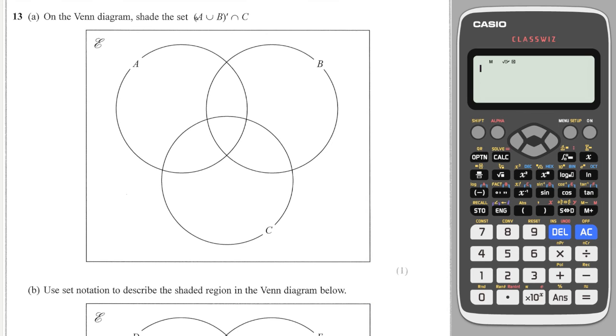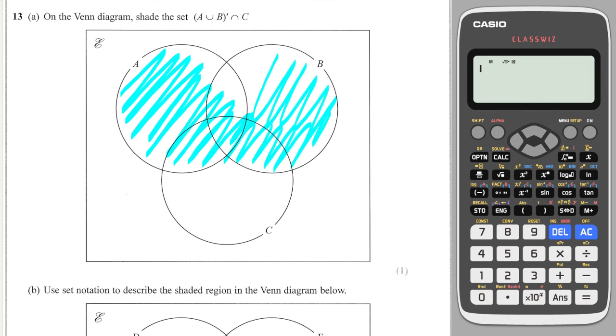Okay, so all the Venn diagrams shade the set, which is A union B, not. So I'll start by shading A union B. That's everything which is in A or B. So that looks like this. And then it's asking me for the opposite of that, so not that. So I want everything which is not shaded blue. And they have to also be in C. So it's everything not blue and in C. Well, that must be this region here, because that's everything which is not blue and is in C.